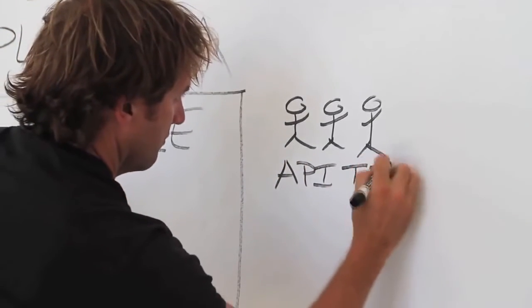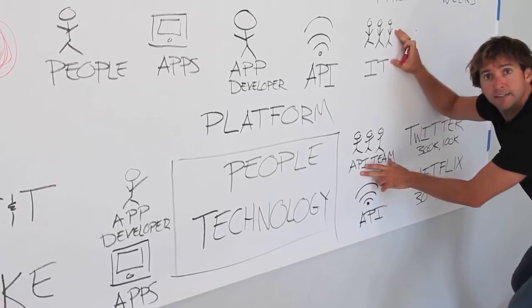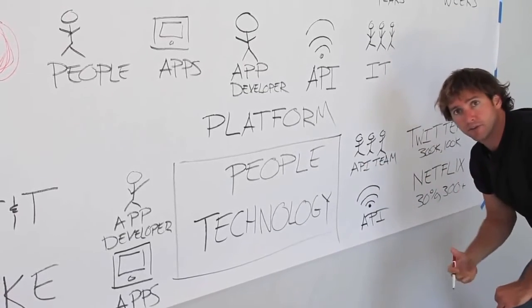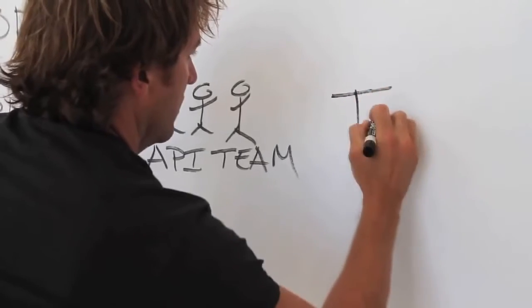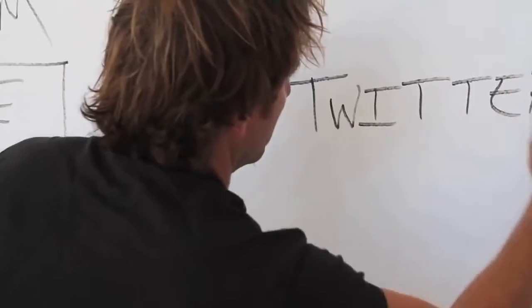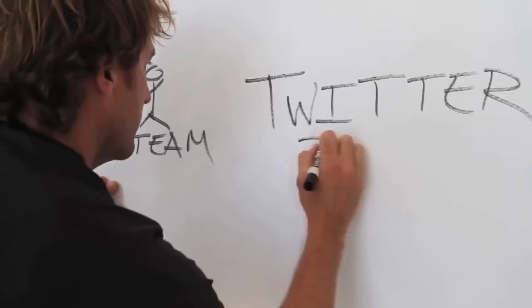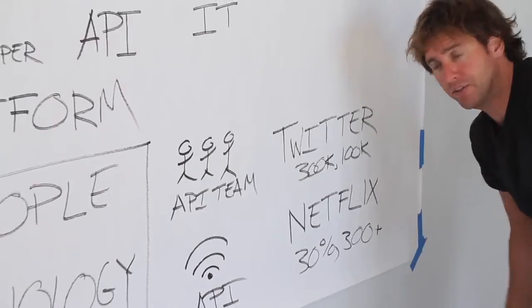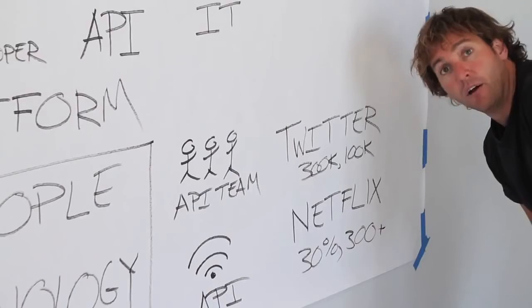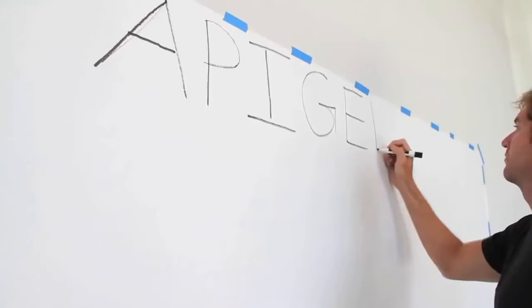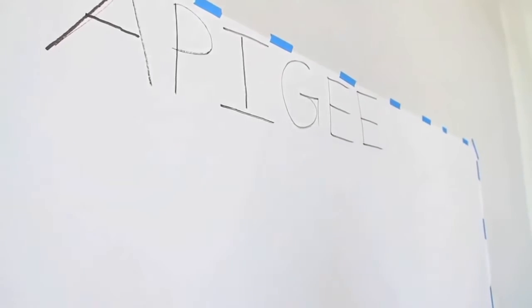Now the API team is a combination of traditional IT with other folks from across the business, from business development, marketing, and so on. Few companies in the world make this connection better than Twitter. Twitter has 300,000 registered applications built by hundreds of thousands of application developers. They use Apigee's free API console in order to make this connection.